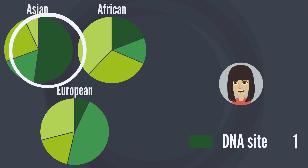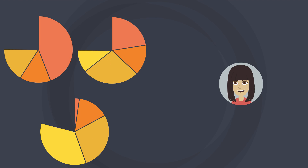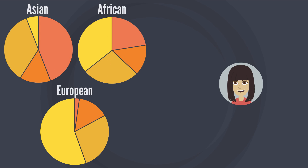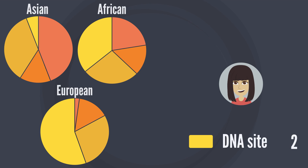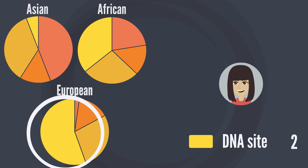The company will need to look at more DNA sites to get a clearer picture. For this second DNA site, Daisy received a yellow DNA variant from each of her biological parents. This DNA variant is present in all the reference populations, but more common in people with European ancestry, so it is more likely that Daisy shares ancestry with them. However, the picture is still not clear.